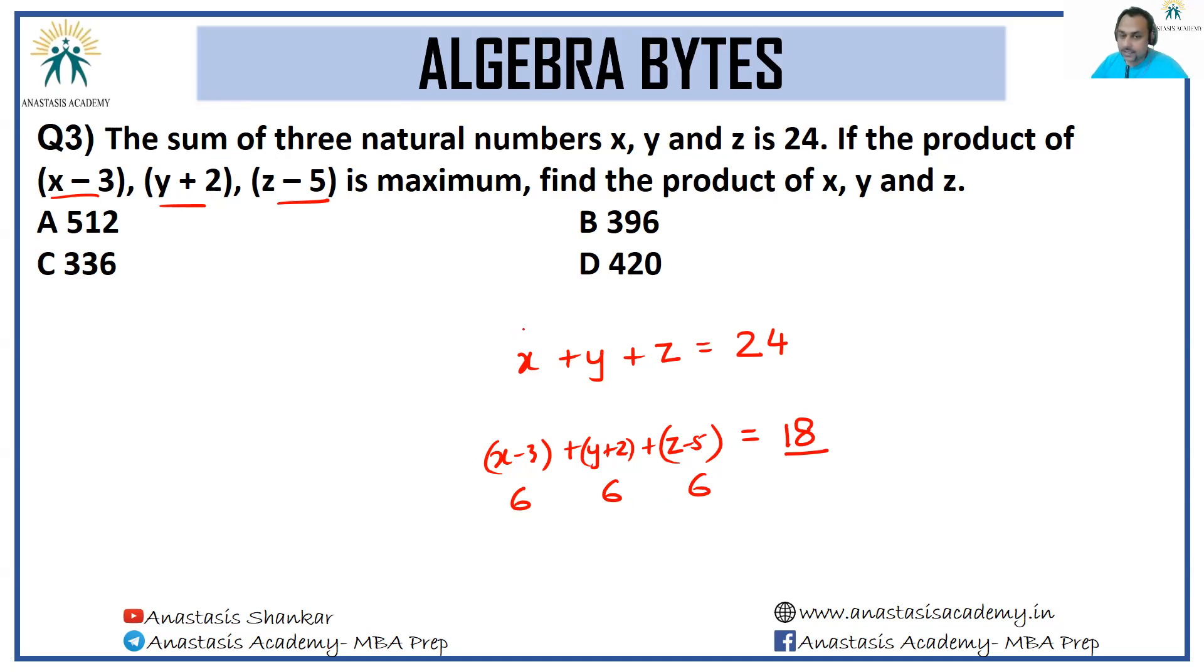Now if x - 3 is 6, x is 9. If y + 2 is 6, y is 4. If z - 5 is 6, z is 11. All I need is product of these numbers. And even when I'm looking for product of these numbers, I know that they have to be a multiple of 9. So this doesn't work, this doesn't work, this doesn't work. The only one that works is this. You can also multiply this: 360 + 36 or 440 - 44, whatever way you want to go, or 99 × 4 = 396, whichever way you want to go. Answer has to be option B.